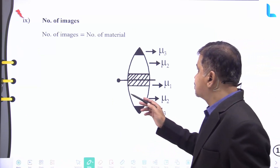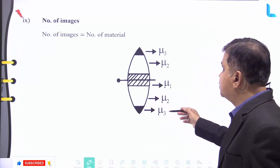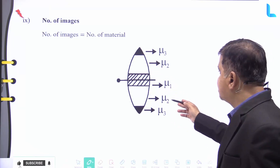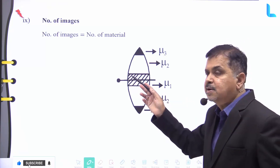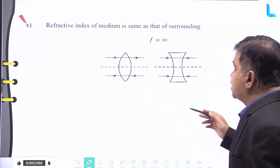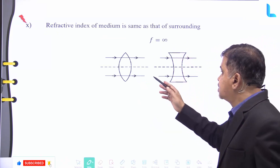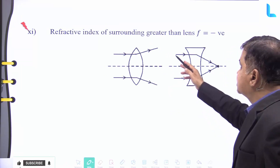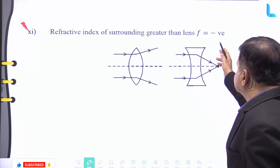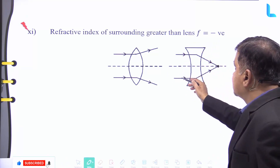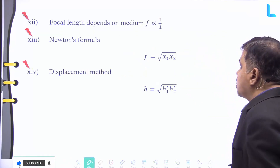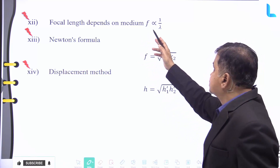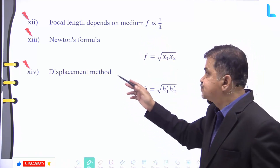The number of images formed depends on the number of different refractive index materials. When the refractive index of the medium equals that of the surrounding, f becomes infinity. When the surrounding refractive index is negative, the focal length becomes negative. Focal length f is inversely proportional to wavelength λ.